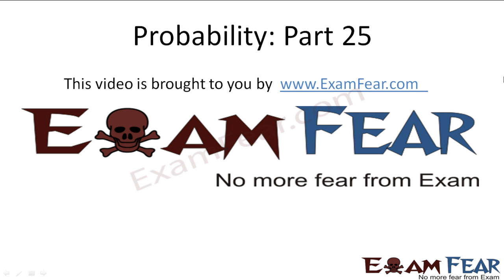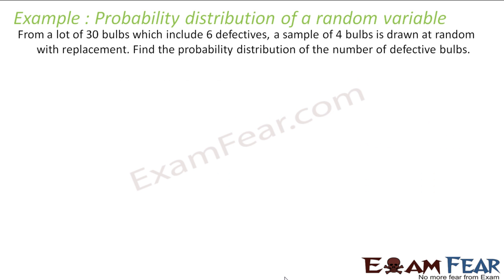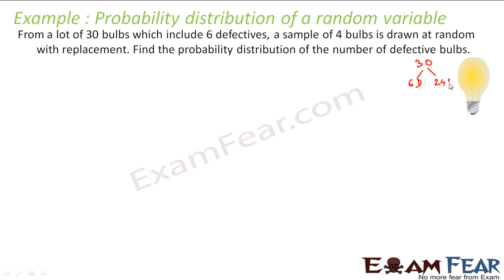Hello friends, this video on probability part 25 is brought to you by examfear.com. Please make sure that you have watched part 1 to part 24 before watching this video. The problem: from a lot of 30 words, there are 30 bulbs which include 6 defective and 24 in working condition. A sample of 4 bulbs is taken out from these.